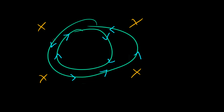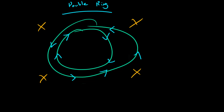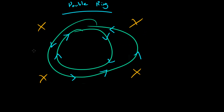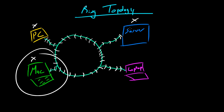The double ring network is also better because if one of the rings breaks or the Ethernet on it breaks, your network is still going to work. This is also technically called a ring topology, but I'm just going to call it a double ring to differentiate it from the single ring.